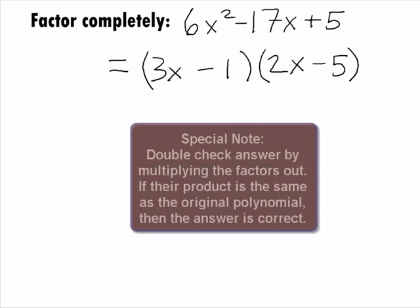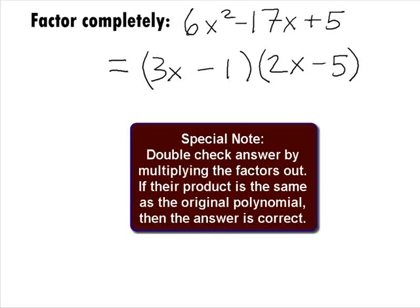Note that we can always double check ourselves on factoring problems by multiplying out the factors that we have. If they multiply to be the original polynomial, then we have the right factors. If they don't, we need to go back and try factoring the problem again. Note that if we multiply this out, we would get the original trinomial.